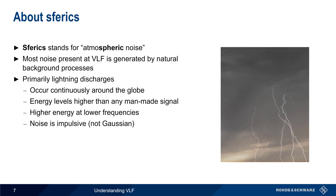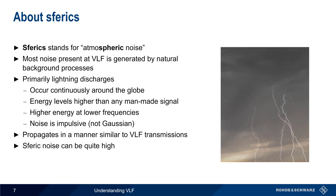This noise is also impulsive in nature, and not Gaussian distributed like most other forms of naturally occurring noise. Noise at VLF propagates the same way as signals at VLF, and thus can affect receivers even when they are quite far from the noise source. And because spheric noise levels can be quite high, VLF communications often require relatively high transmit power to achieve an acceptable signal-to-noise ratio.